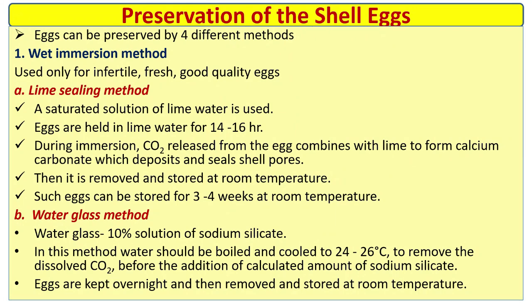Water glass method uses a 10 percent solution of sodium silicate. Water should be boiled and cooled to 24 to 26 degrees Celsius to remove dissolved carbon dioxide before the addition of the calculated amount of sodium silicate. Eggs are kept overnight and then removed and stored at room temperature.